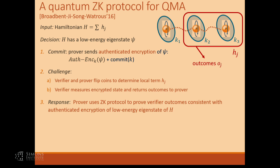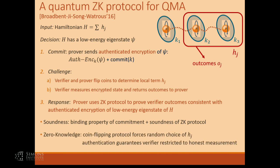The verifier just measures directly on top of the authenticated encryption and obtains outcomes, then returns the outcomes to the prover. At this point, the prover has the outcomes and the keys attached via the commitment. It's going to engage in a classical zero-knowledge proof demonstrating to the verifier that it holds keys matching the commitment, and furthermore, if you decode the verifier's outcomes under the keys, you obtain outcomes on the original state that satisfy the quantum constraint.